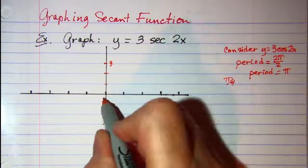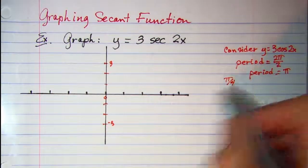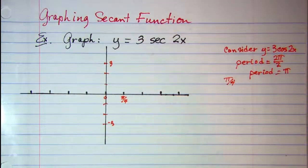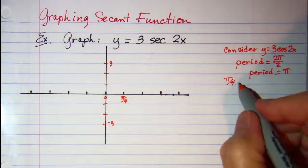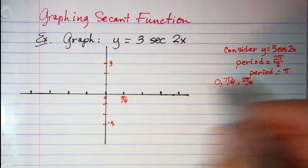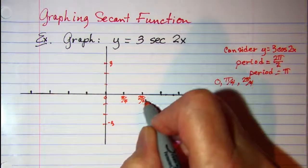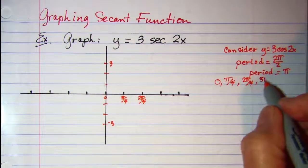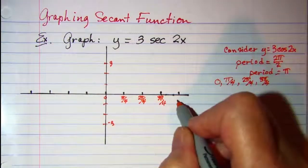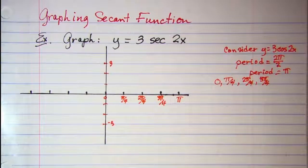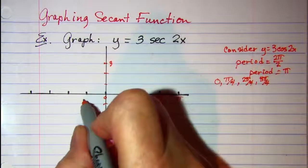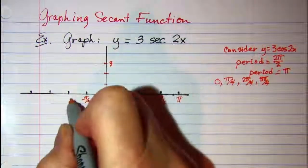So I have 0 and then π over 4 and then 2π over 4 and then 3π over 4, and then 4π over 4 which is just π. Let me go ahead and label to the left as well.